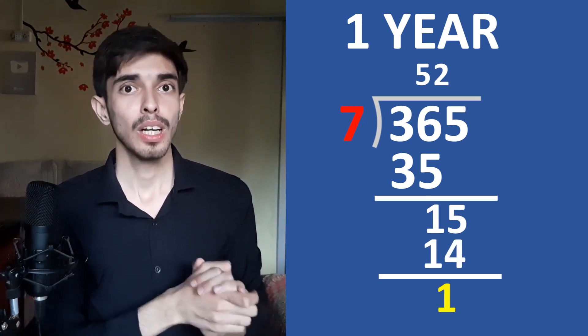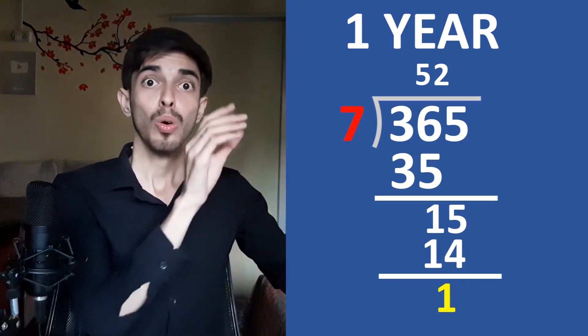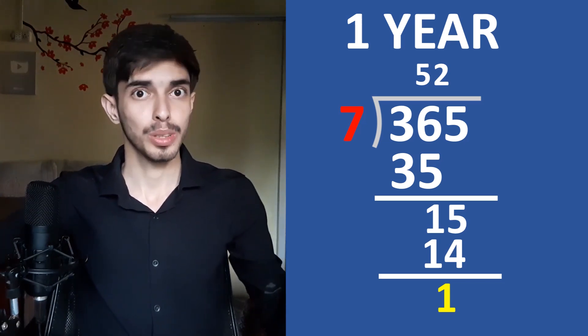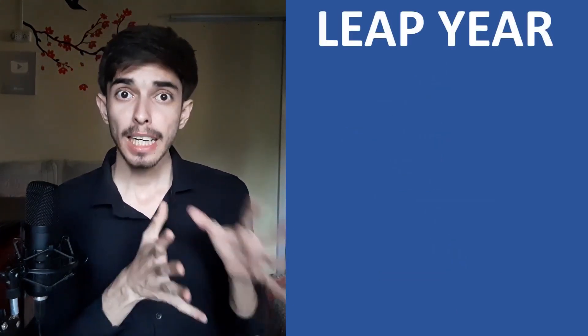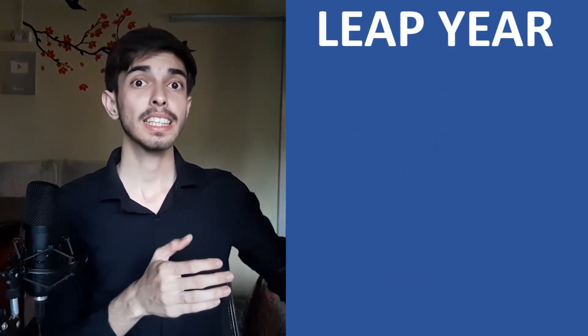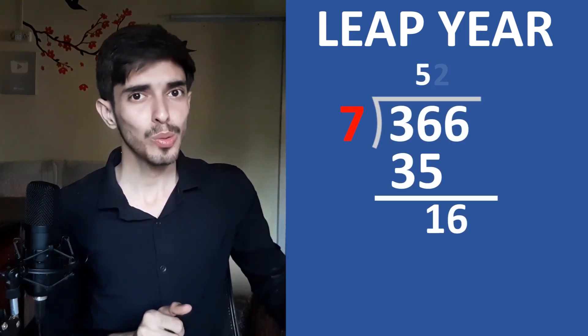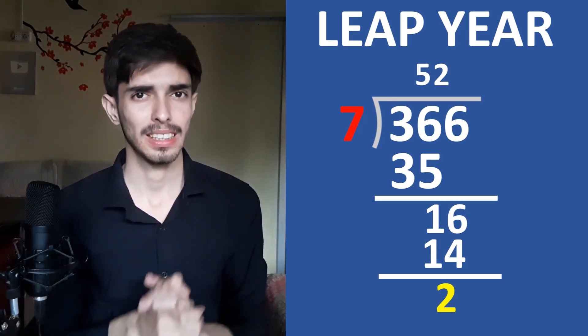This means that if on a certain date this year it is a Monday, then on that same date next year it will be a Tuesday — a difference of 1 extra day. That was for a normal year. For a leap year, we have 366 days. Divide by 7, and the remainder is 2. So whenever a normal year passes, 1 odd day; whenever a leap year passes, 2 odd days.